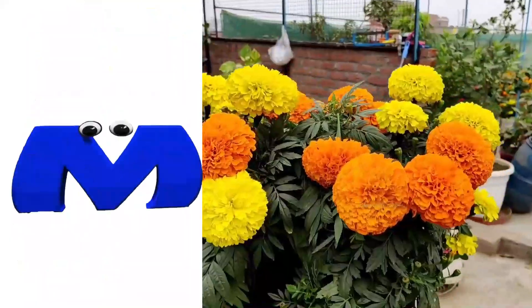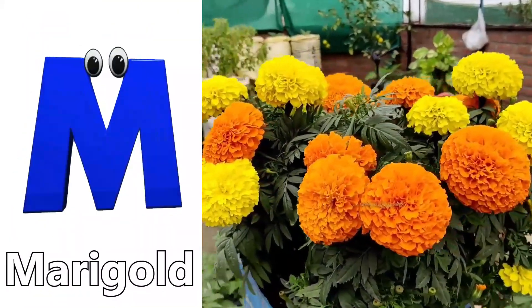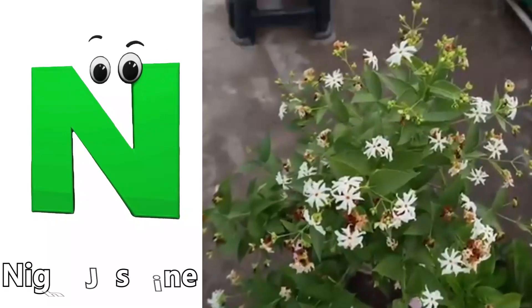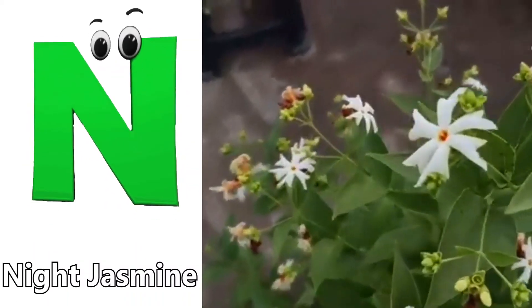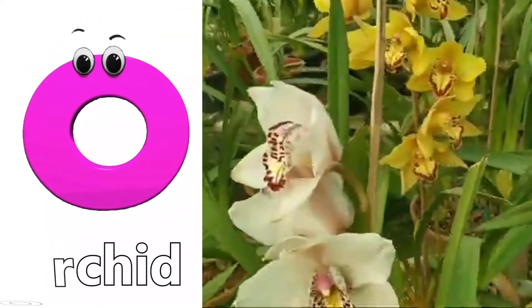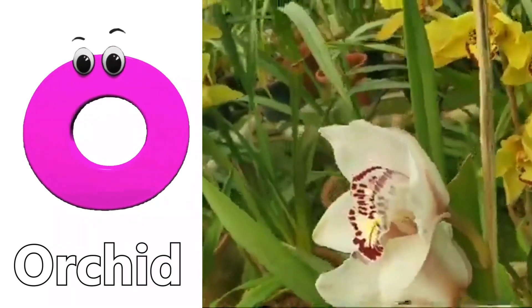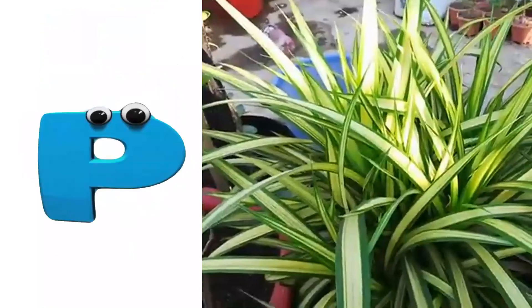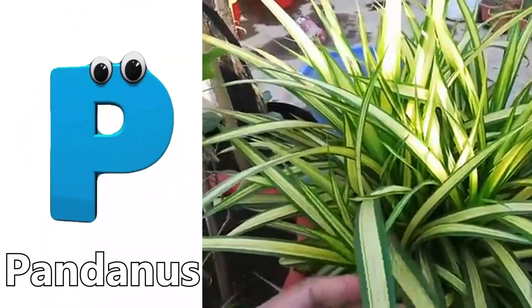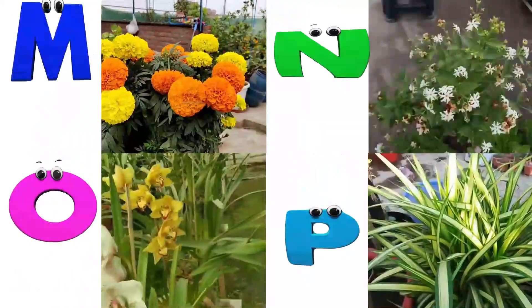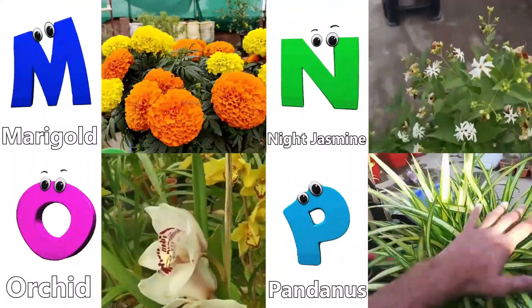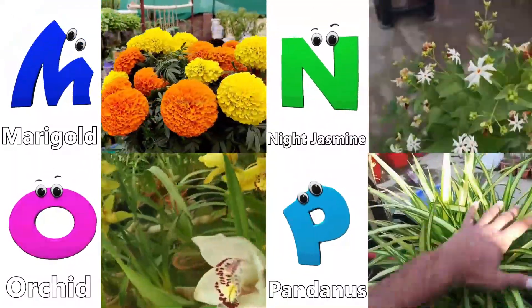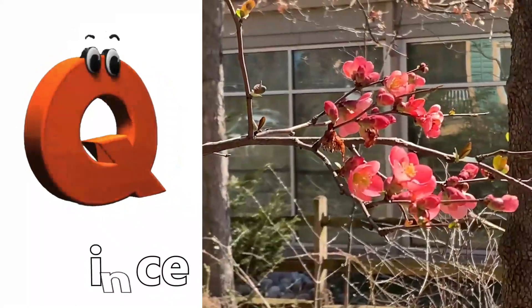M is for Marigold. N is for Night Jasmine. O is for Orchid. P is for Pandanus.